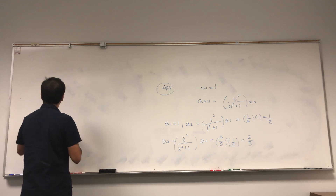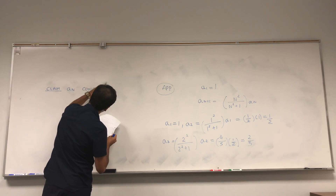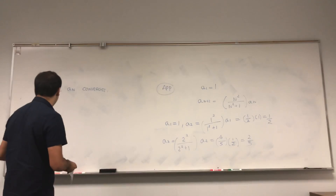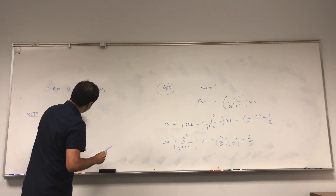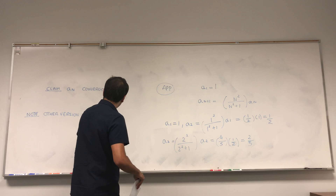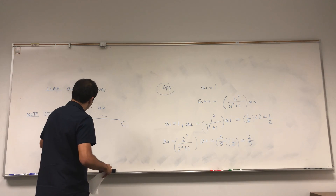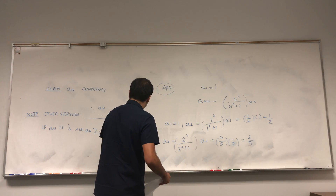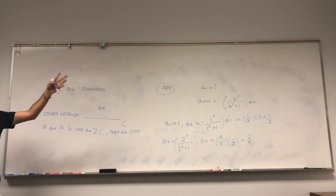Claim: a_n converges. For this we use the Monotone Sequence Theorem in the other version: if a_n is decreasing and bounded below by some constant, then a_n converges. The proof of this other version: just consider −a_n, which is increasing and bounded above, so it converges by the previous version.